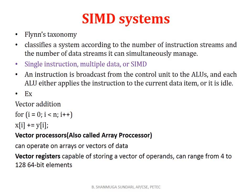Instructions are broadcast from the control unit into the ALU, and each ALU either applies the instruction to the current data item or is idle. An example operation is vector addition: x[i] = x[i] + y[i]. In SIMD, a single instruction operates on multiple data items simultaneously — that is the key example of Single Instruction Multiple Data.